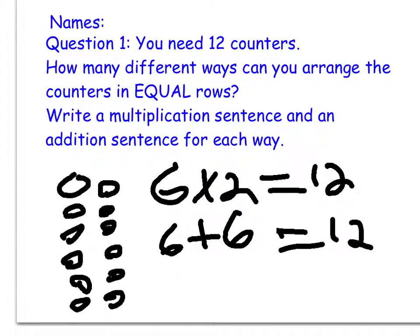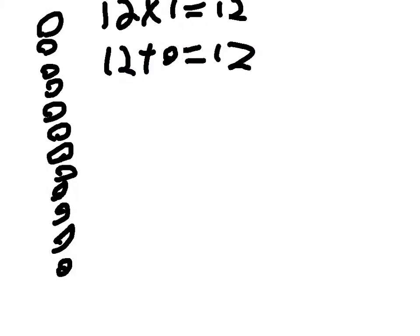6 times 2 is 12, and if you do 6 plus 2, it's 12 too. 12 times 1 is 12, and 12 plus 0 is 12. All 12s.